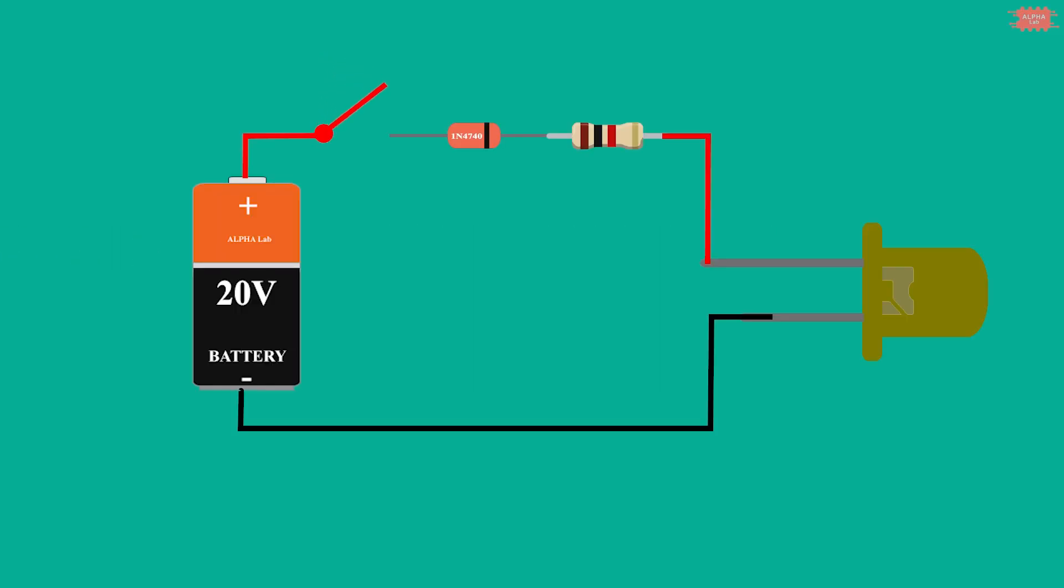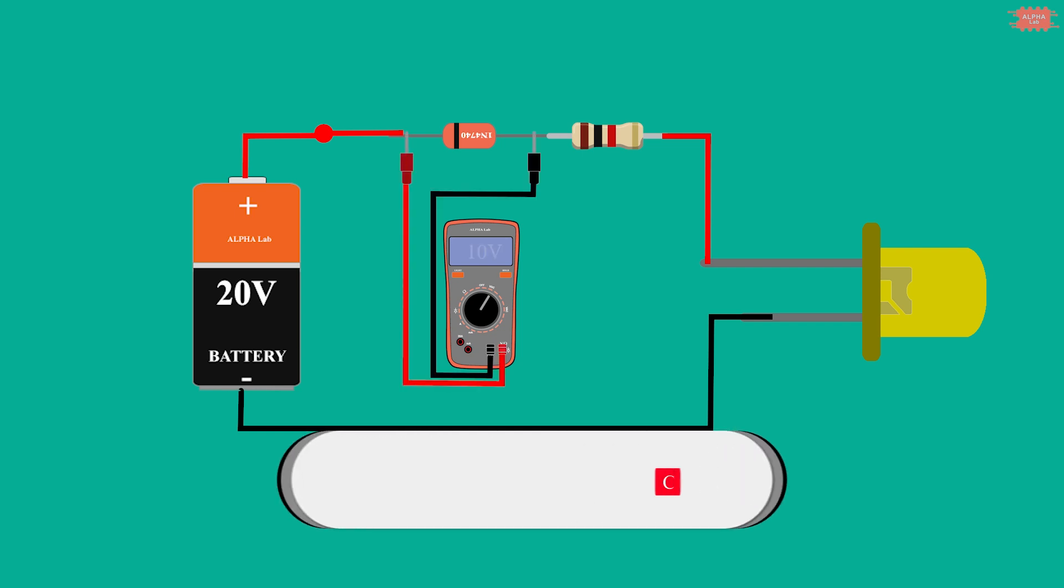The zener diode is similar to the single diode in forward bias conditions. However, the zener diode is able to conduct in reverse bias conditions. When the zener diode works at reverse bias, there is a voltage drop across the zener. This voltage is called zener voltage and depends on the type of zener, which you can check in the manufacturer datasheet.